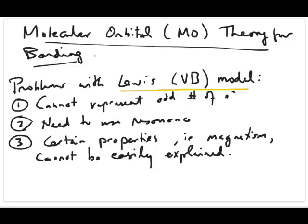The Lewis model can't really represent odd number of electrons. So if you have something like NO, which has 11 electrons, you just can't draw a Lewis structure for this. You can't predict its properties or anything else associated with that particular molecule.